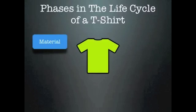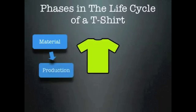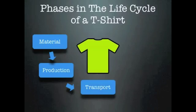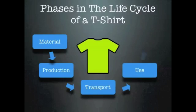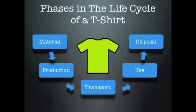The material phase is where the fibers are harvested or manufactured. The production phase is where the textile is made. The transport phase is involved in every step of the way. The use phase is where the consumer wears it. And the disposal phase is at the end of the road.